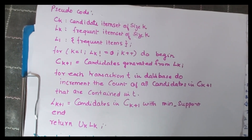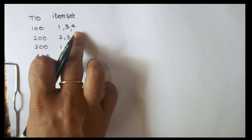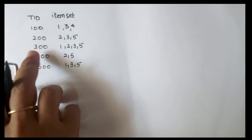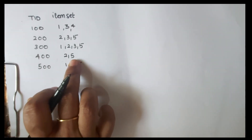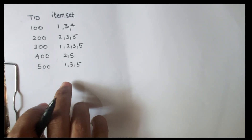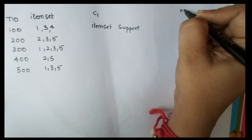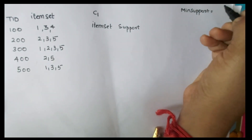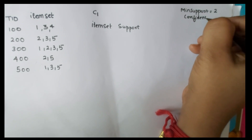With the help of a problem, we will check how this is done. A transaction database is given with transaction IDs and item sets. According to our algorithm, the first thing we have to find is the frequent item set. The minimum support is equal to 2, and the confidence is given as 60%.